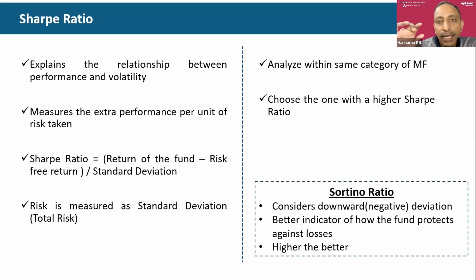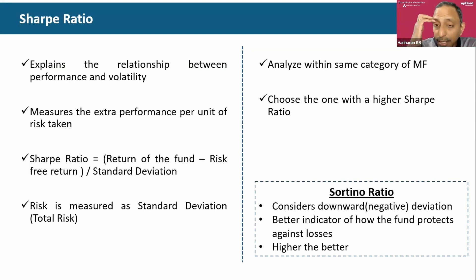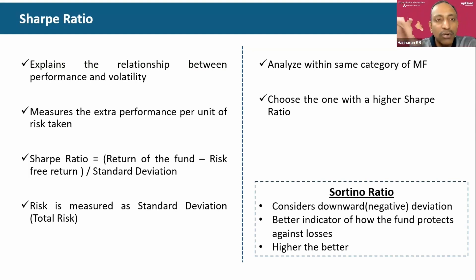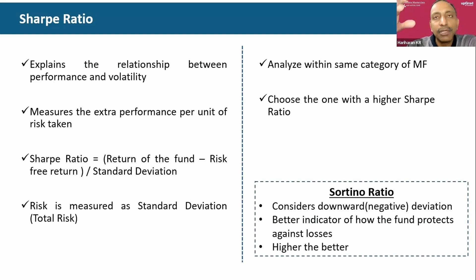What Sortino tells us is how capable the fund is of protecting losses, since only downside values are taken. Higher the Sortino ratio, the better — meaning in a downward market, the fund is better at protecting the investment. Sortino is not readily available, whereas Sharpe Ratio is easily accessible. So generally people use Sharpe, but Sortino is a slightly better indicator of reward, especially in a downward market cycle.